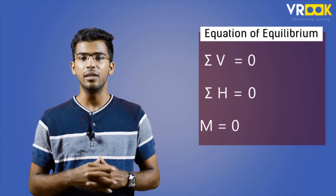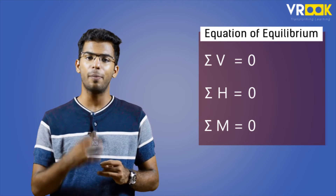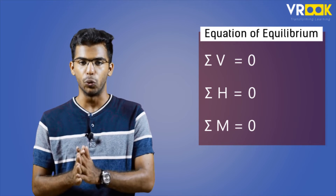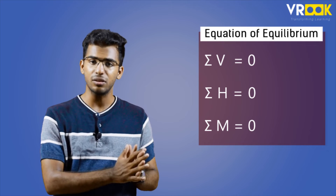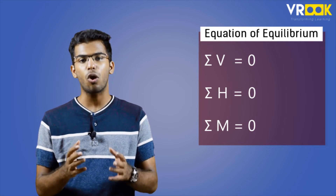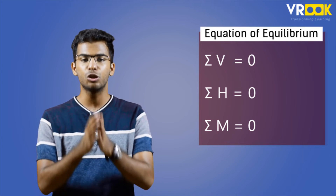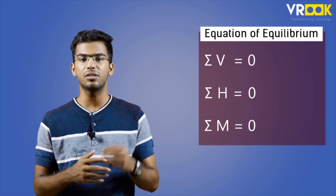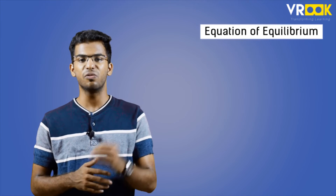And finally, the summation of all the moments in the system should be equal to zero — that is, clockwise and anti-clockwise moments should be equal. Only when these three conditions are satisfied, the system will be in equilibrium. So when we analyze a beam, we should always remember these equations of equilibrium.